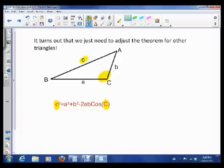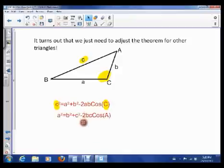Now that's not to say that we can only work with those. We can also isolate a as long as then, in the cosine, we take the cosine of angle a. We can also isolate b as long as we take the cosine of angle b.